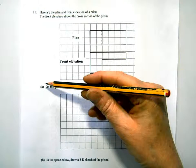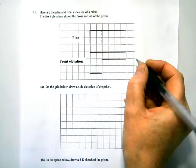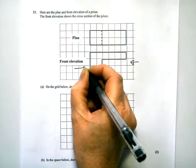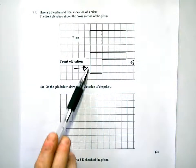So part A, on the grid below, draw a side elevation of the prism. You could think of, there's two sides you could draw. You could draw that side or that side. I'm going to look at the prism from this side.